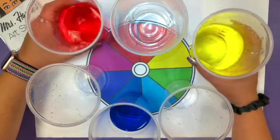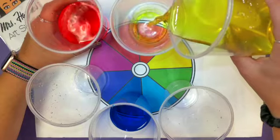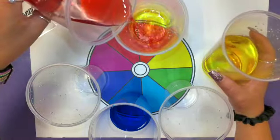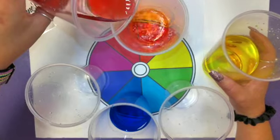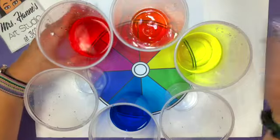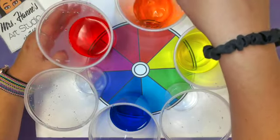So, we're gonna mix together red and yellow and see what color we get. What color is that? We've got orange. There's our orange.